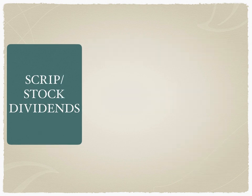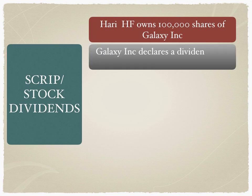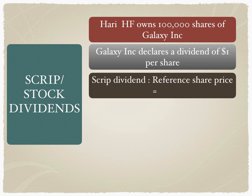Now let's look at where there is a choice given to the investor and the investor has to communicate their action. This is the cash versus stock dividend scenario. Hari Hedge Fund owns 100,000 shares of Galaxy Inc. Galaxy Inc. declares a cash dividend of $1 per share and has also mentioned a reference share price of $50. The reference share price is computed by Galaxy Inc. based on SEC regulations, using the closing share prices over the last six months on the New York Stock Exchange.